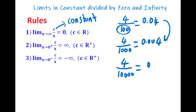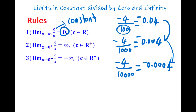Continuing: if you divide 4 by 10,000, we get 0.0004. The number keeps decreasing. It doesn't matter if c is positive or negative — it's still going to go to zero. That's why in this case the result is always zero. c is a real number, so it doesn't matter whether it's positive or negative.